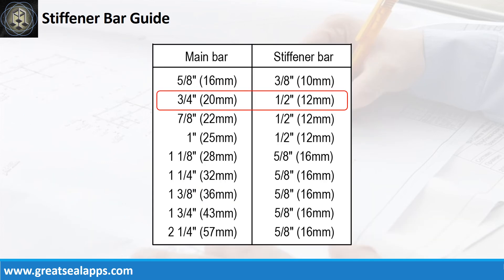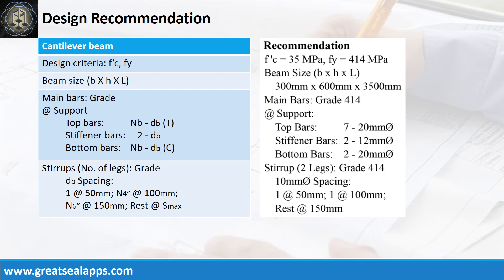For 20 mm main bars, use 12 mm stiffener bars. Design recommendation as follows: stirrup of 2 legs, grade 414, 10 mm bar spacing — 1 at 50 mm, 1 at 100 mm, rest at 150 mm.